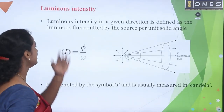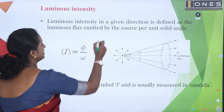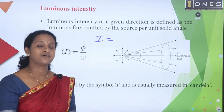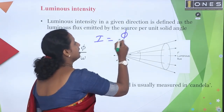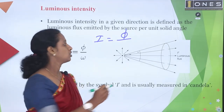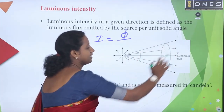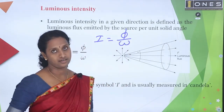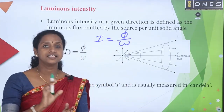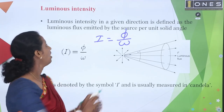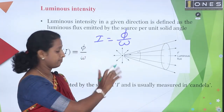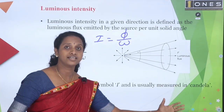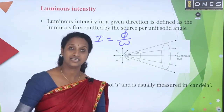Luminous intensity is luminous flux divided by solid angle. A solid angle is a particular area, represented by omega. The unit of omega is steradian. The unit of luminous intensity is candela.